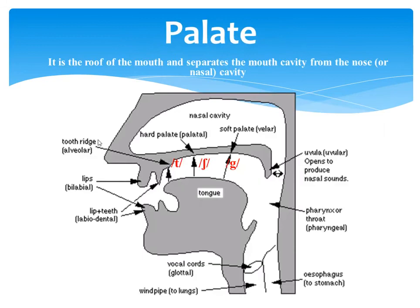The palate — the second speech organ — is simply the roof of the mouth. You can see that this roof of the mouth has four parts.